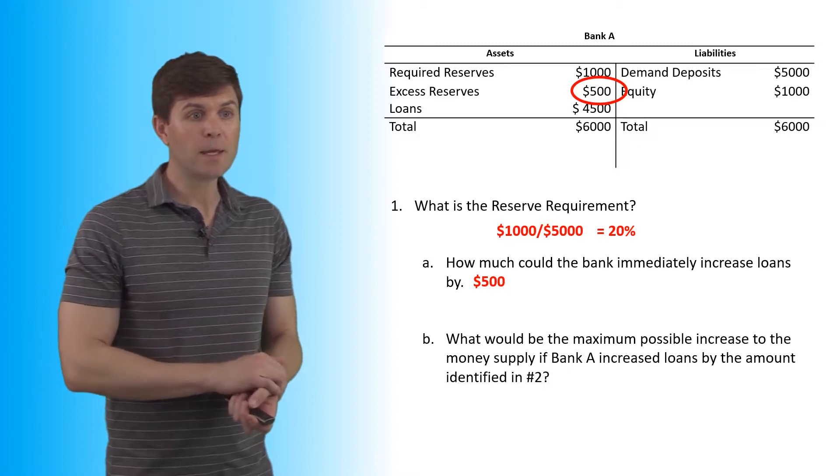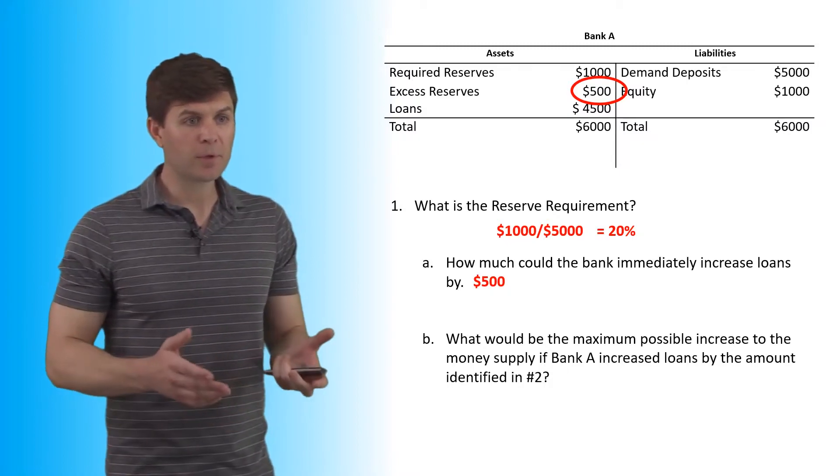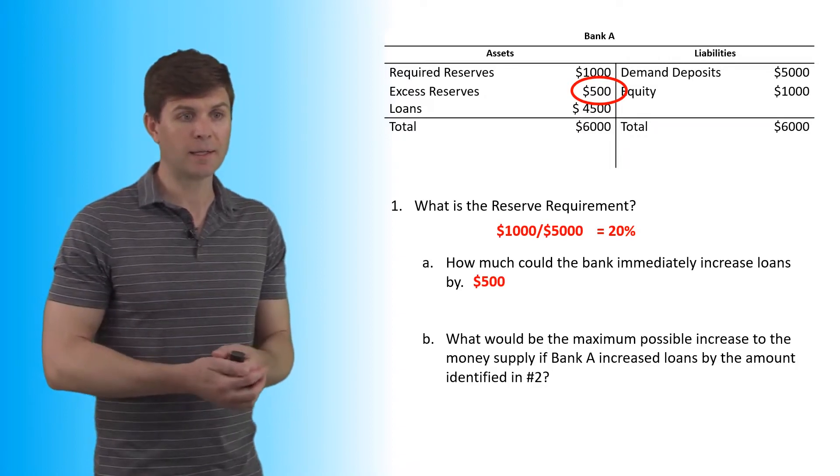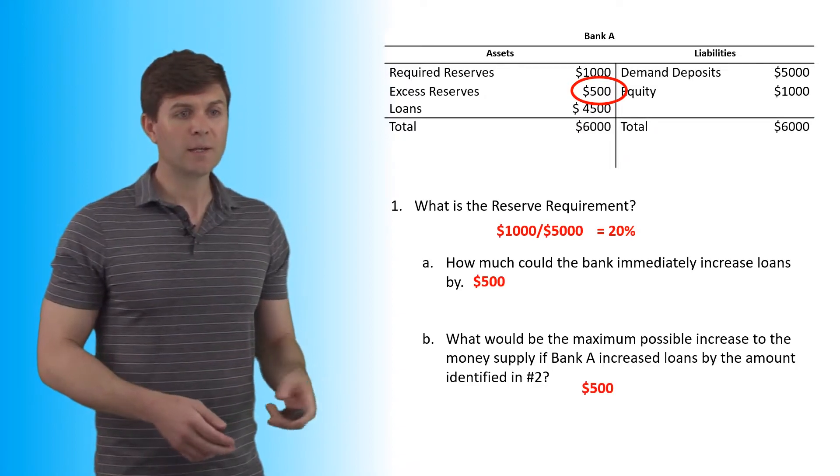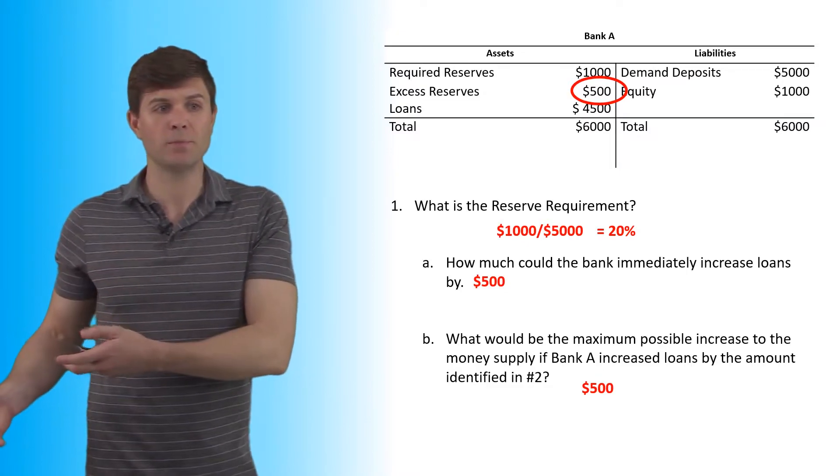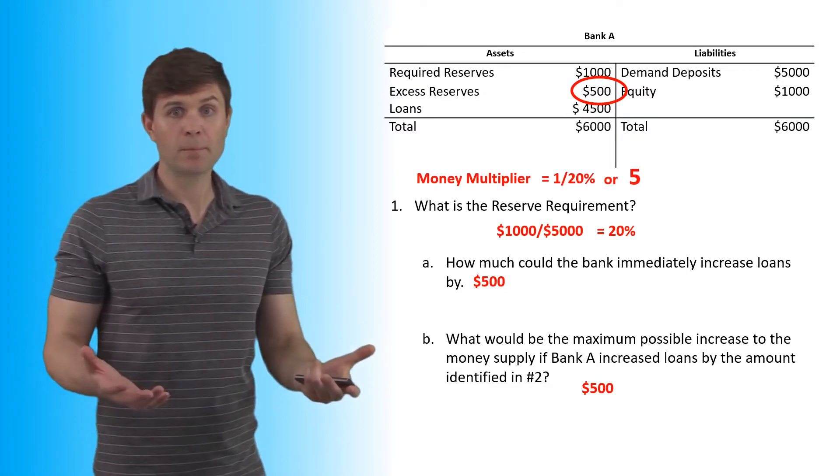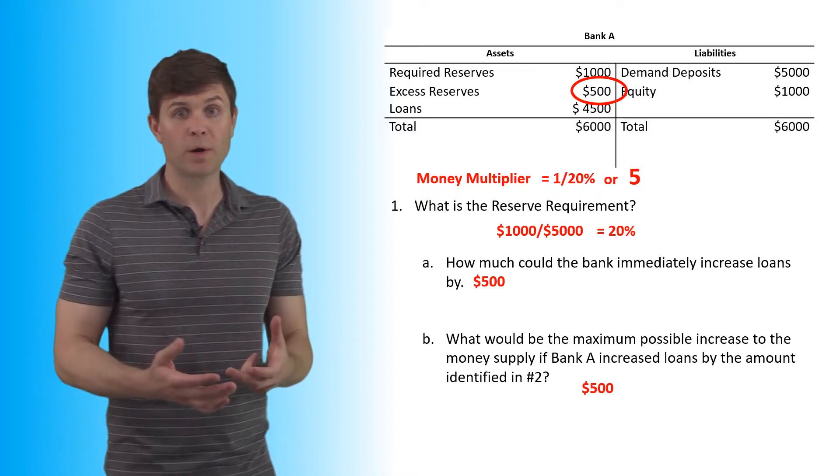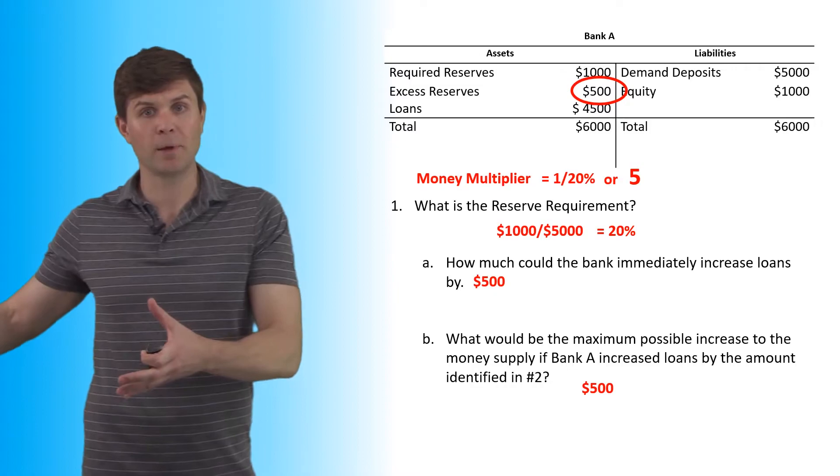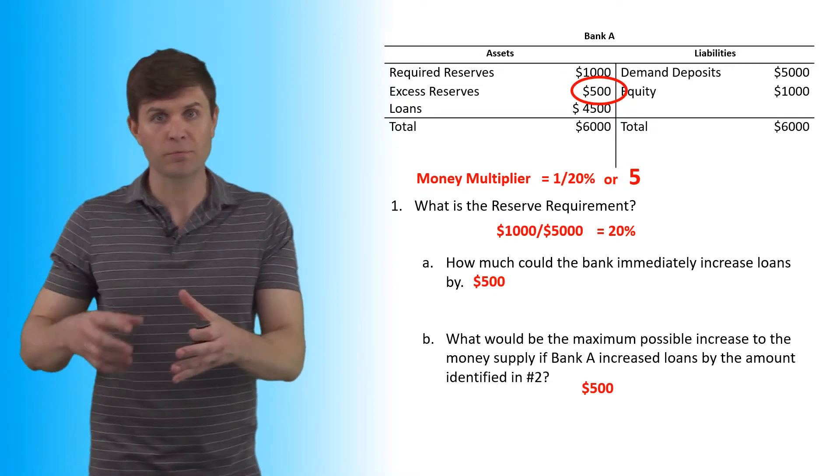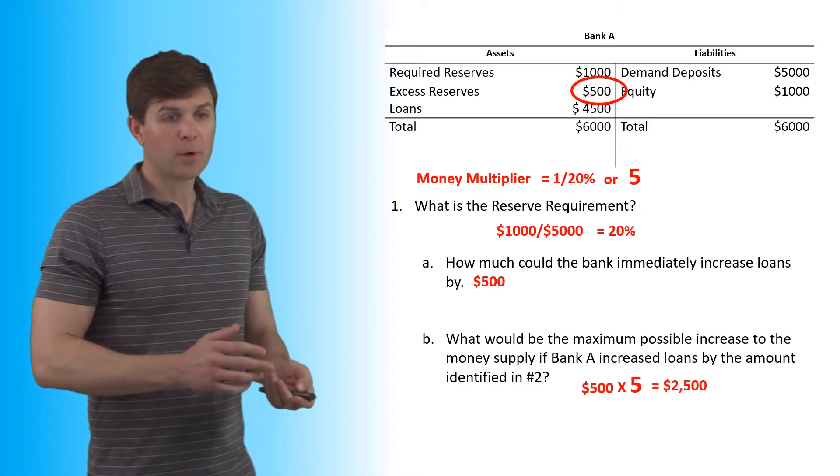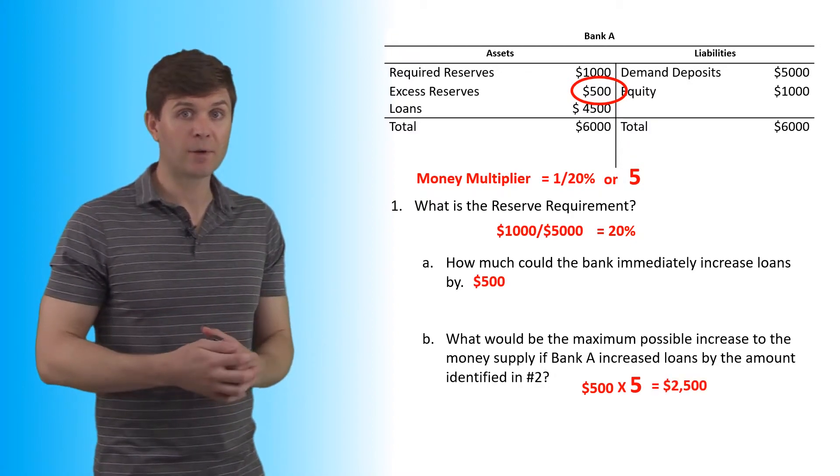All right, now with B, what would be the maximum possible increase to the money supply if Bank A increased loans by the amount identified in number two? So in this case, we're going to take that $500 that's going to get loaned out. What would that be increased by? So first we had to figure out our money multiplier, and that's always one over the reserve requirement. In this case, it ends up being five. So we know that every dollar is going to be multiplied by five as it goes through the fractional reserve banking system. So this is going to get multiplied by five, that $500 is going to turn into $2,500.